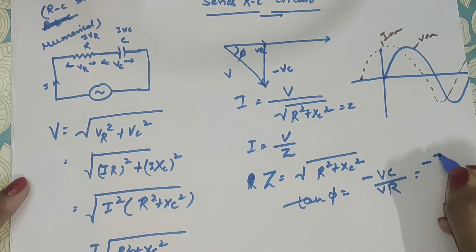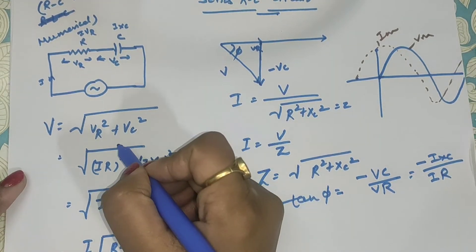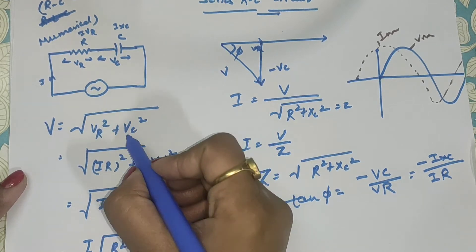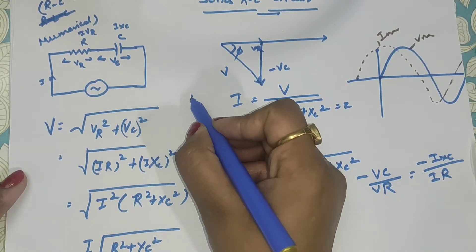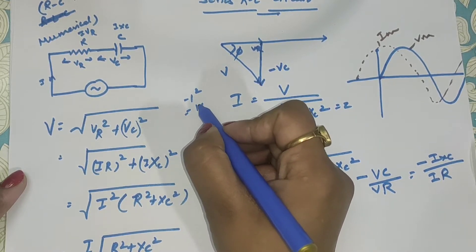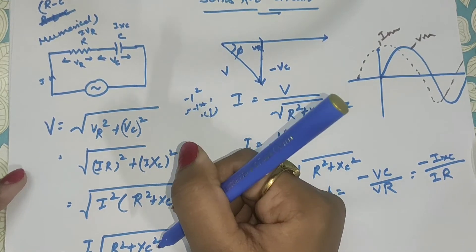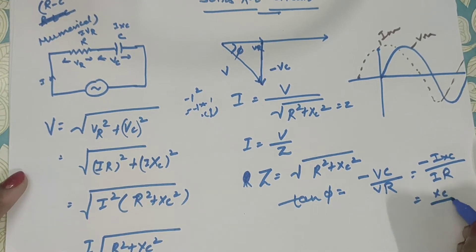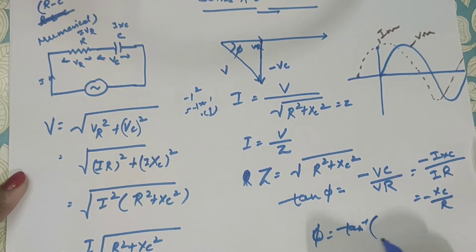So tan phi equals minus XC upon R. You can ask me why there is a minus — this is minus, but in the square term it will always be positive, because minus one squared equals positive one. So in the impedance formula we took positive values. Therefore, phi equals tan inverse of minus XC upon R.